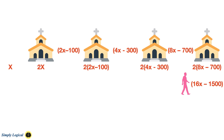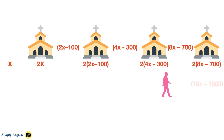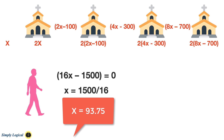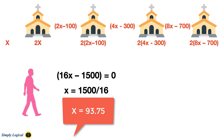According to our equations, at the end of the fourth church, the equation is 16x minus $1,500 equals 0. After solving for x, we get x equals 93.75. Hence, the person had started his quest with $93.75 in his pocket.